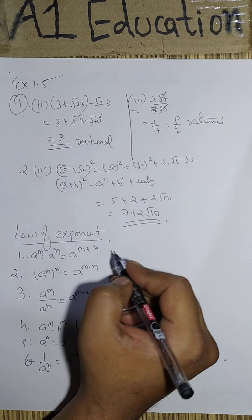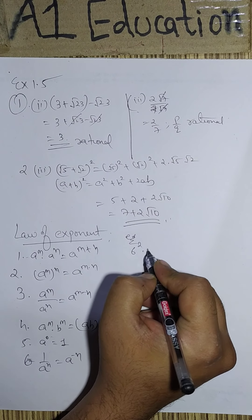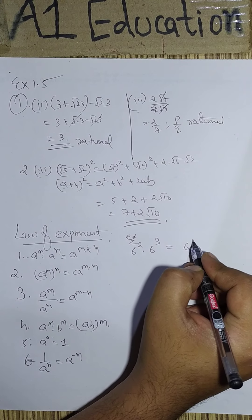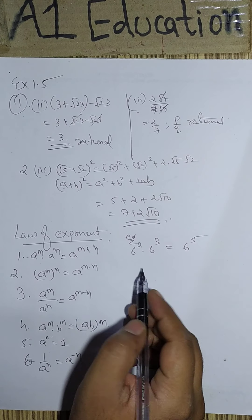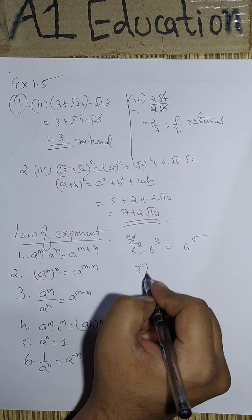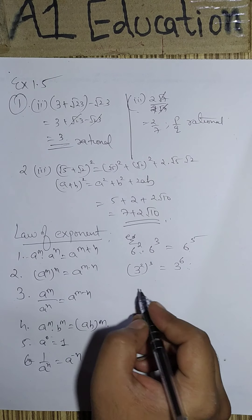Let us see how does this works. We take examples and discuss. So 6 to the power 2 dot 6 to the power 3. It becomes 6 to the power 3 plus 2, 5. You can cross check this. Then 3 to the power 2 to the power 3. It becomes 3 to the power 6. Again you can cross check. You will get the same answer.